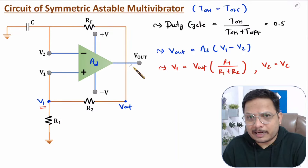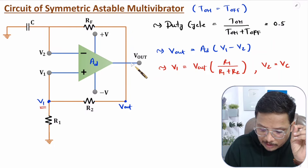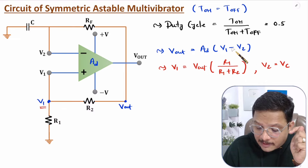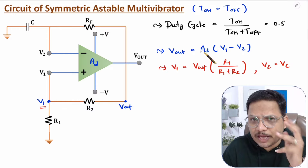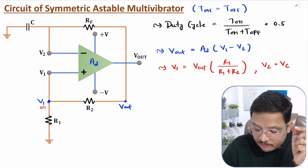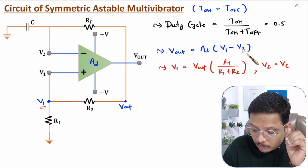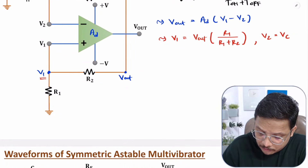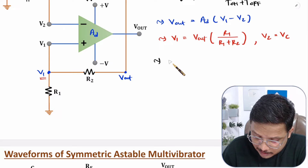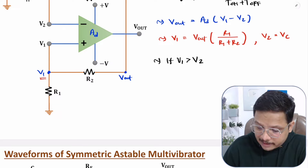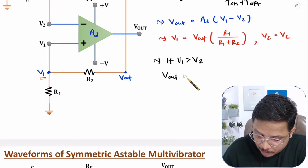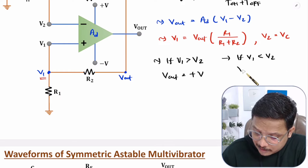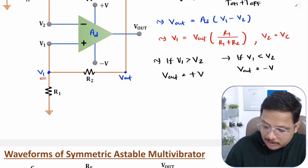The output has two possibilities: either V-plus or V-minus. If V1 is greater than V2, the difference is positive; that positive difference is amplified by the huge gain, so output goes to V-plus. If V1 minus V2 is negative, the negative voltage is amplified by the huge gain, so output will be minus V. So to get V-out positive, V1 must be greater than V2; if V1 is less than V2, output will be minus V.